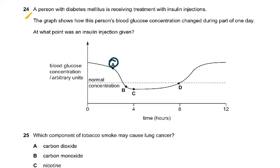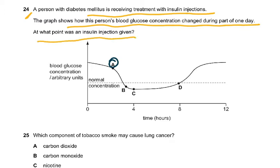Question 24: a person with diabetes mellitus is receiving treatment with insulin injection. The graph shows how the person's blood glucose concentration changed during part of one day. At what point was insulin injection given? Anything which is going to lower the blood glucose. At A, there's a rapid decrease after that. B, C, and D, it's nearly the same, it's not changing.